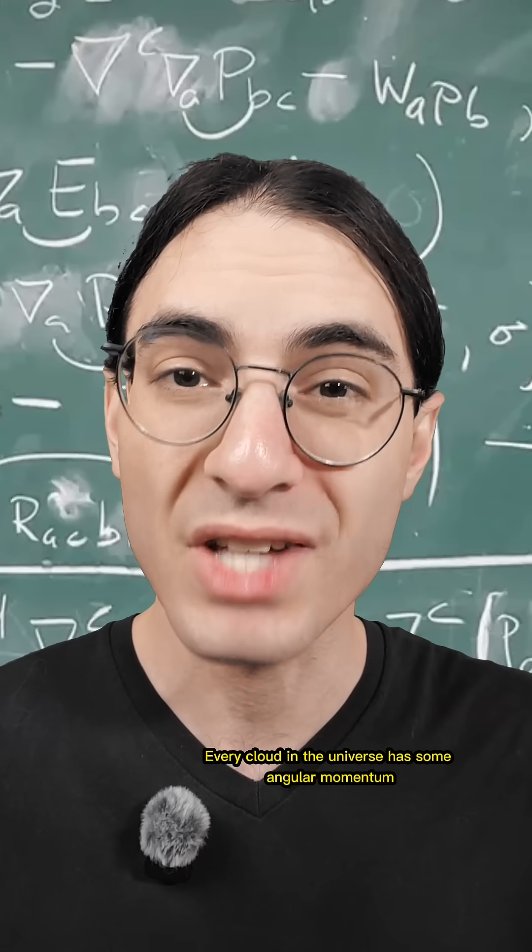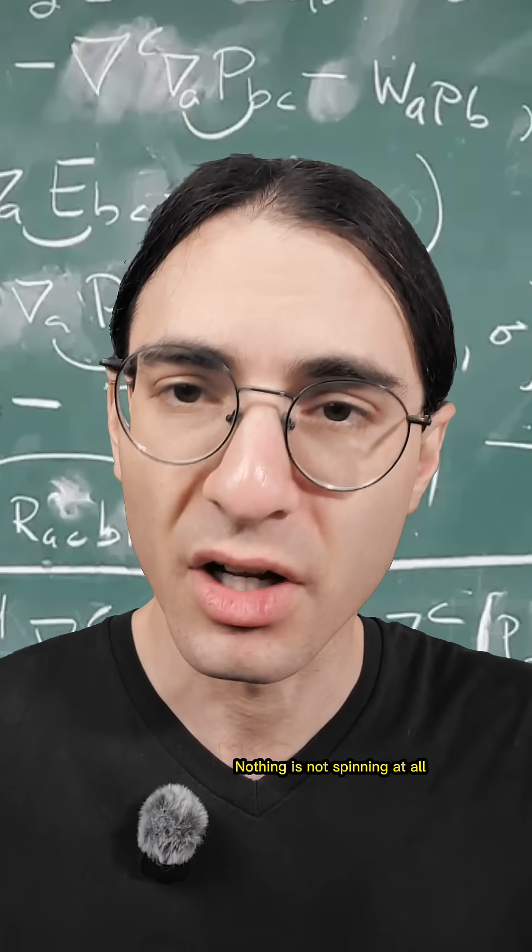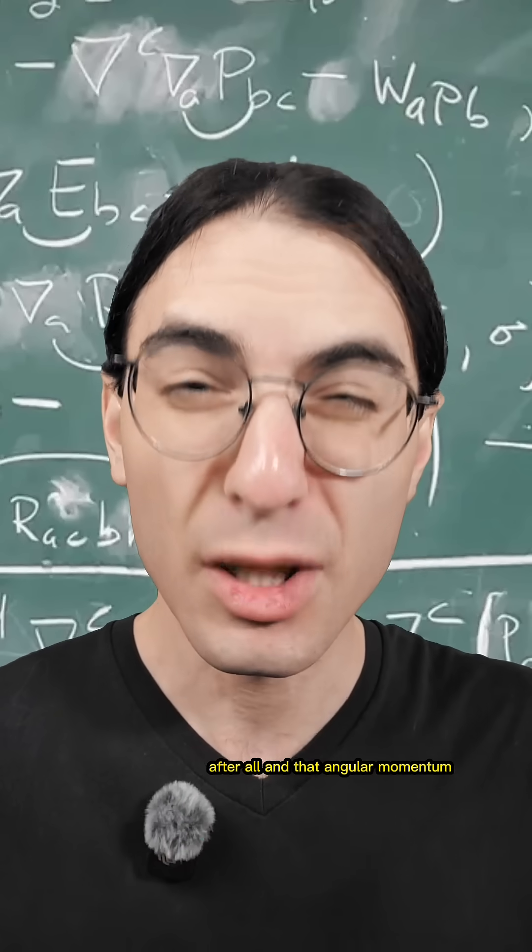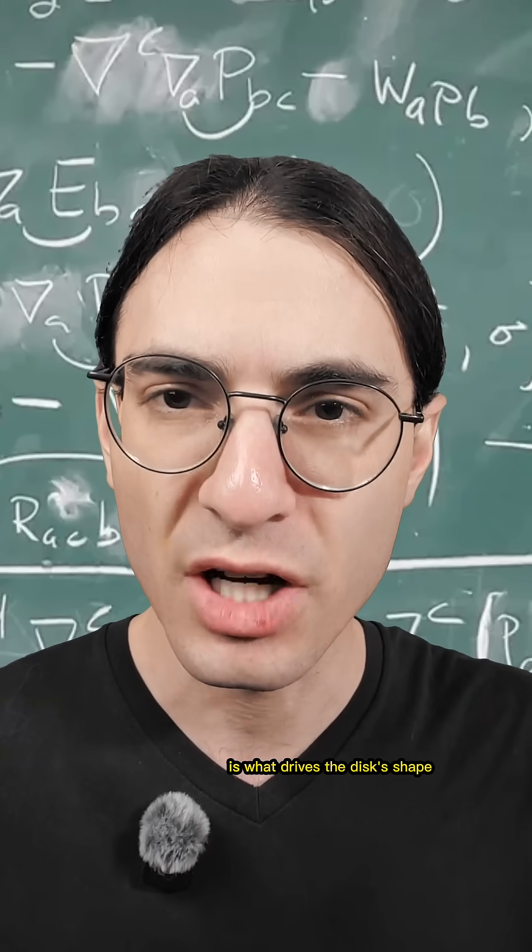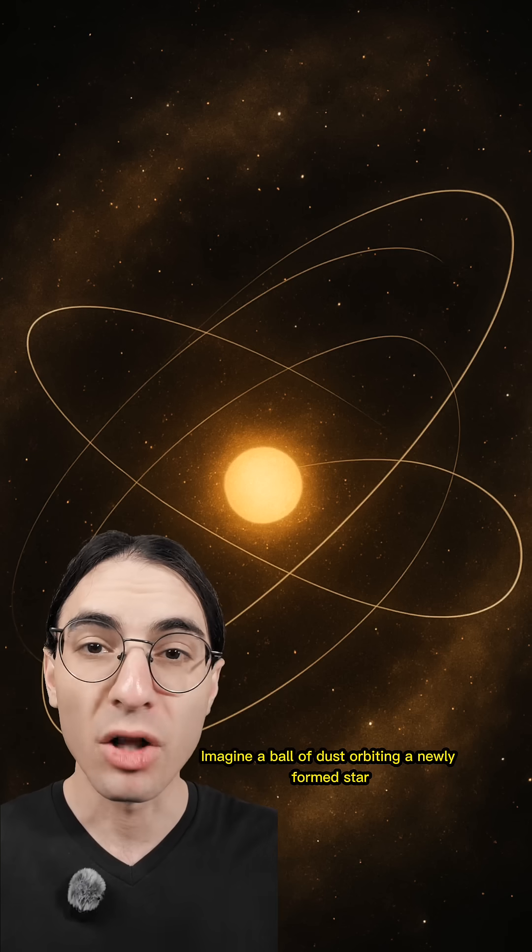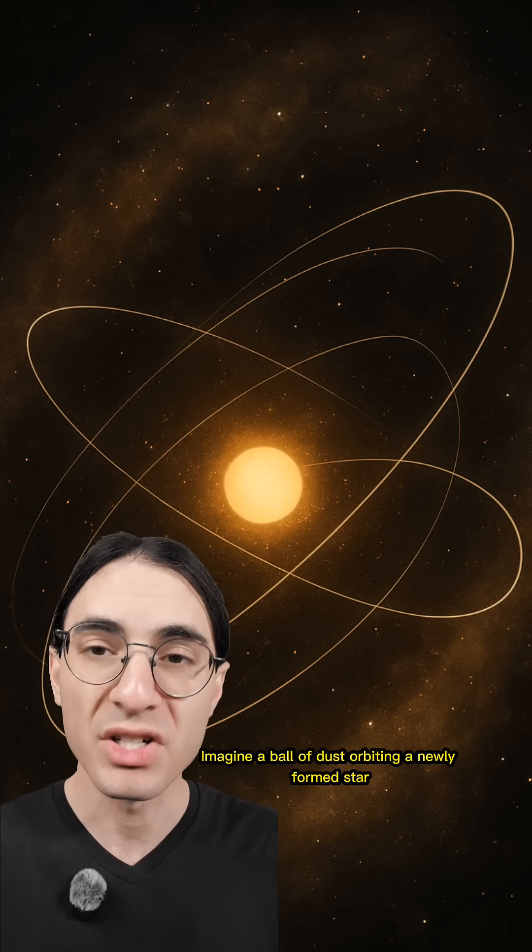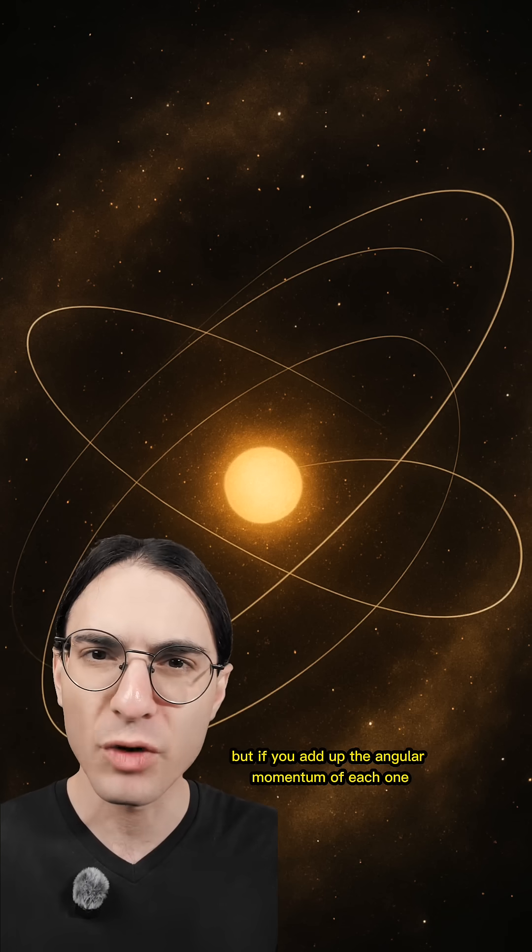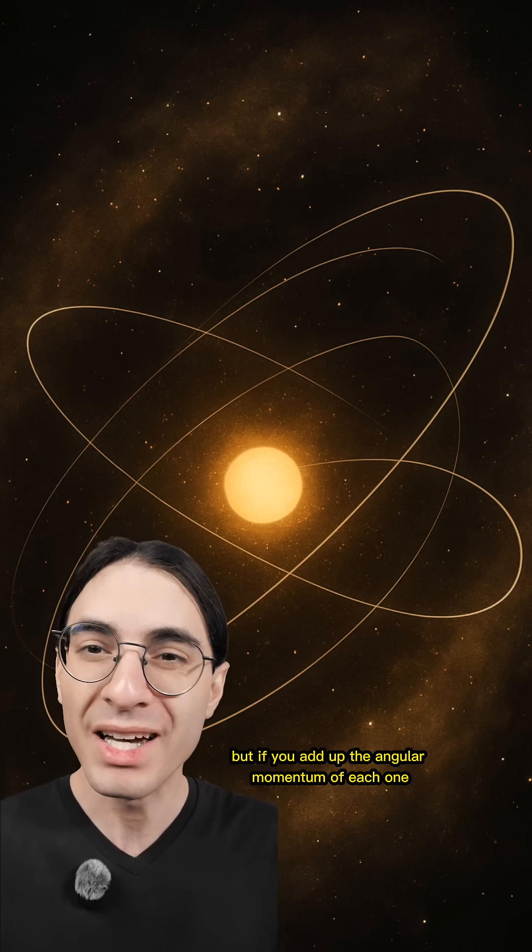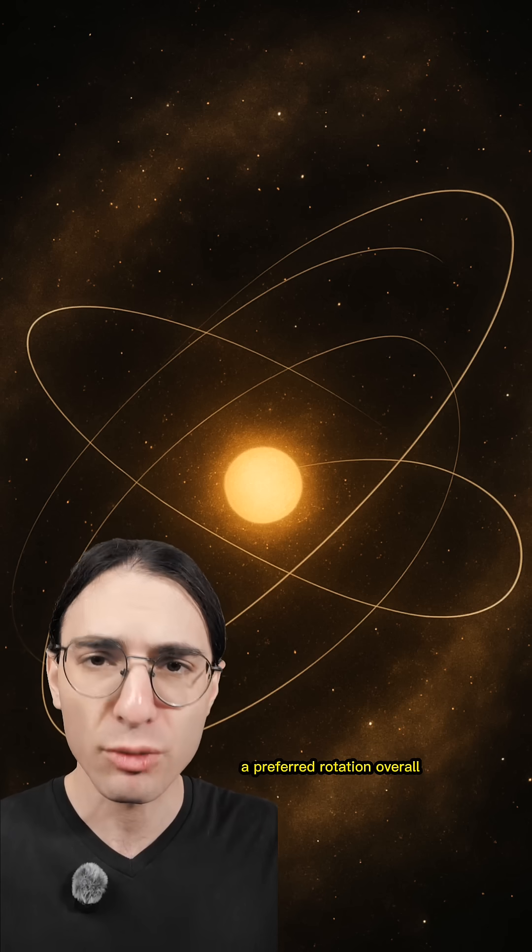And every cloud in the universe has some angular momentum. Nothing is not spinning at all, after all. And that angular momentum is what drives the disk's shape. Let me explain. Imagine a ball of dust orbiting a newly formed star. The dust particles are moving in many directions, but if you add up the angular momentum of each one, you get a net angular momentum, a preferred rotation overall.